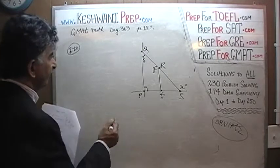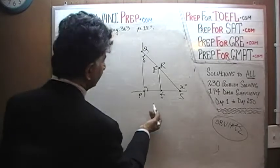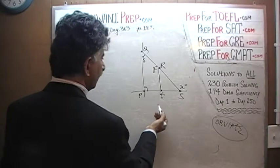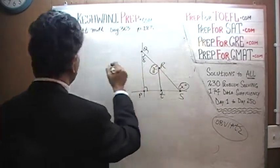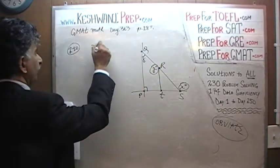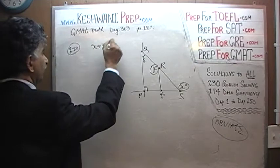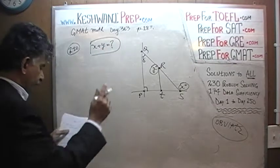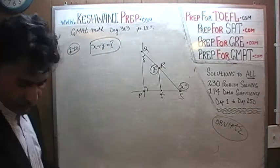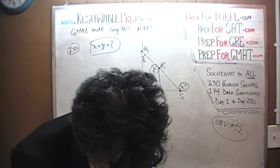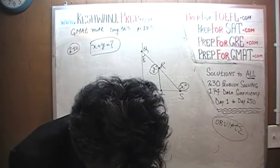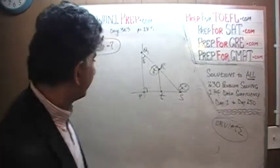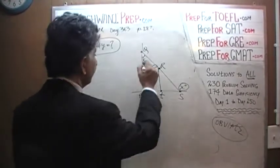The question is how much is x plus y? That's what they are looking for. They must tell us something else — and they tell us that z is 50.